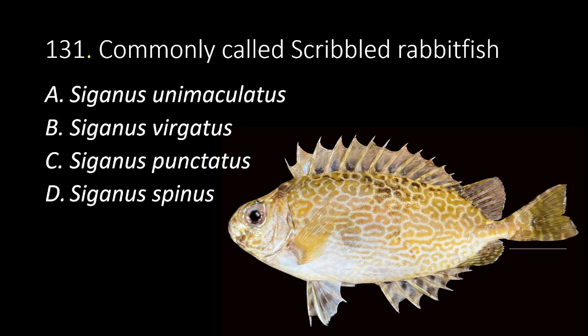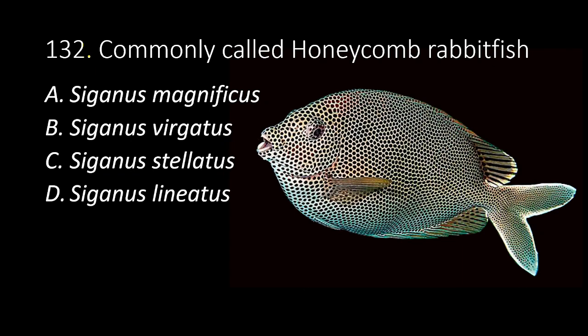131. Commonly called scribbled rabbit fish. A. Siganus javus. B. Siganus virgatus. C. Siganus punctatus. D. Siganus spinus. The answer is D, Siganus spinus.